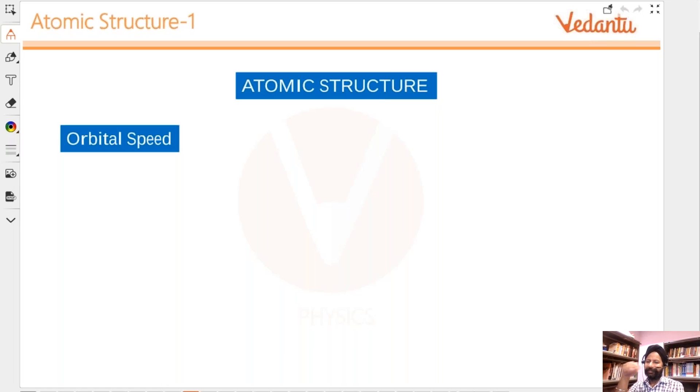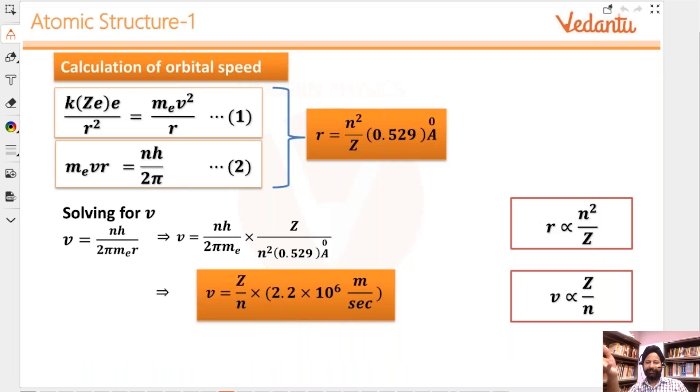Till now we were talking of radius. We had two variables, two equations - we eliminated velocity and found the radius. Now we'll do the opposite: eliminate radius and find velocity. It's the same thing. Velocity comes out to be 2.2 × 10⁶ times z/n meters per second, in SI units.